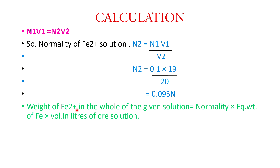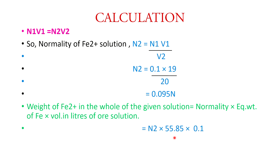The weight of Fe²⁺ in the given solution equals the normality N2 multiplied by the equivalent weight of iron (55.85) multiplied by the volume in liters of the ore solution. The ore solution was initially prepared in 1 liter, so we calculate the total amount in that 1 liter solution.